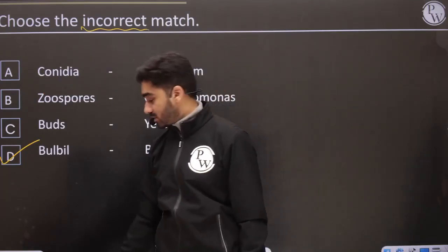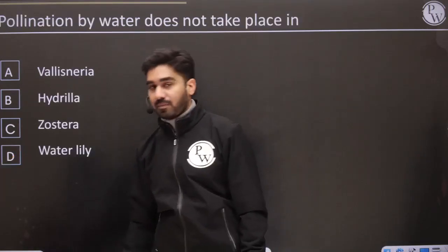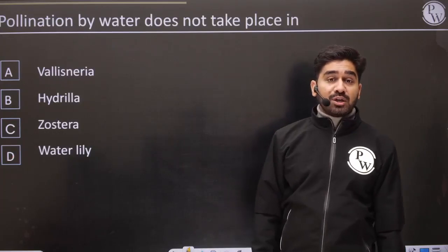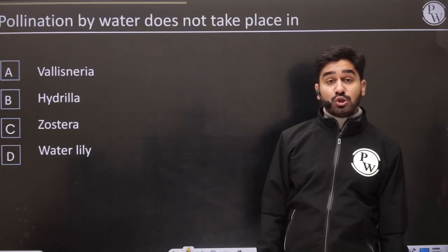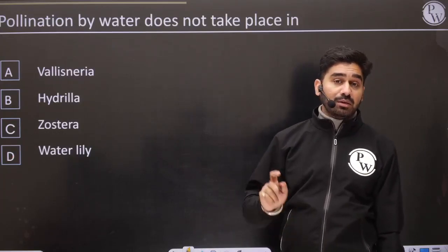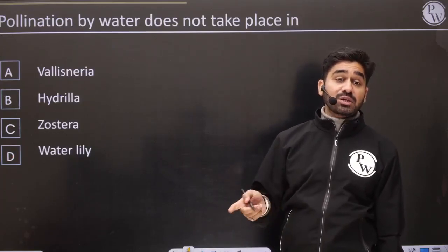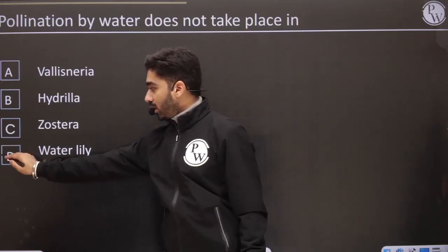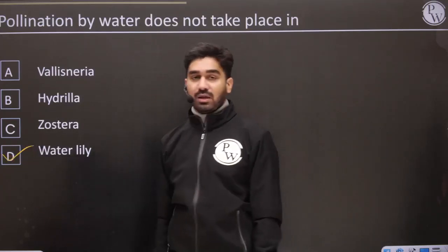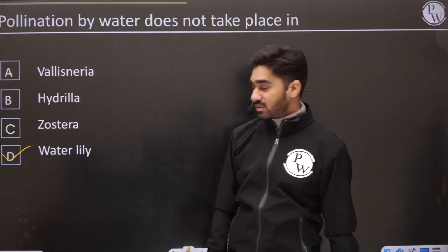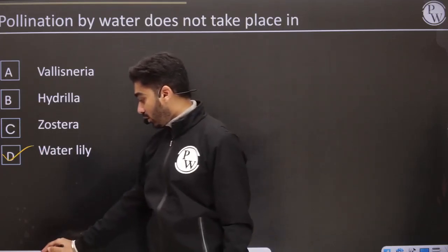Pollination by water does not take place in which? In water lily, lotus — pollination by water does not occur in these. Eichhornia and Pistia are examples where water pollination does happen.